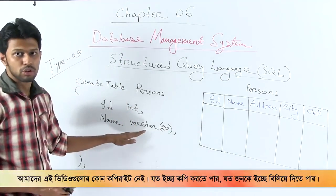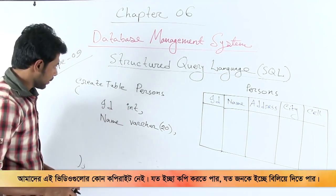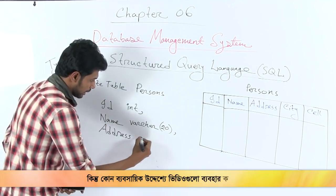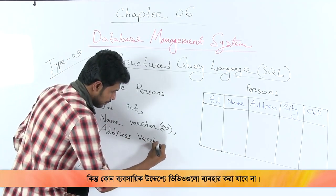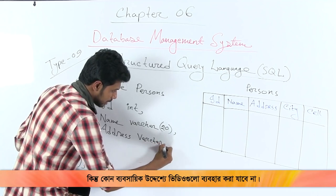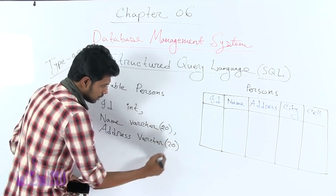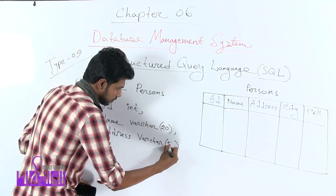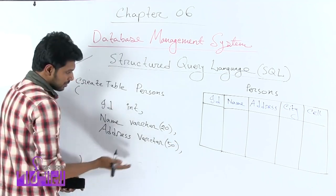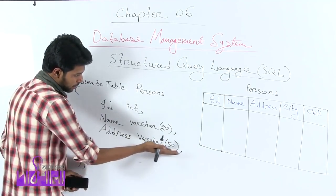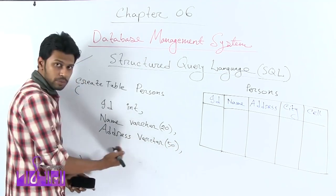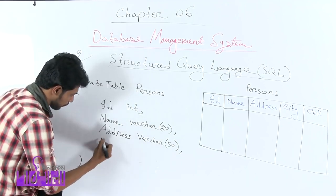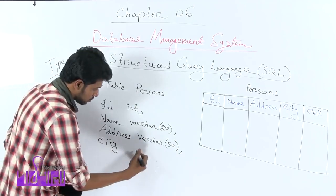But the person's name is less than 1. This is the address column. This is the variable character length. This is the length of 20. This is the address of 50 — meaning maximum 50 letters.